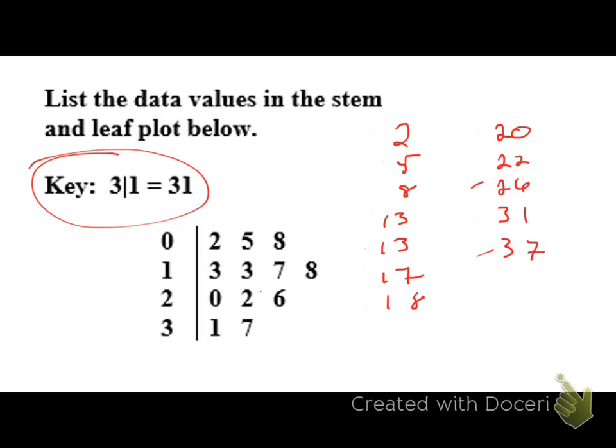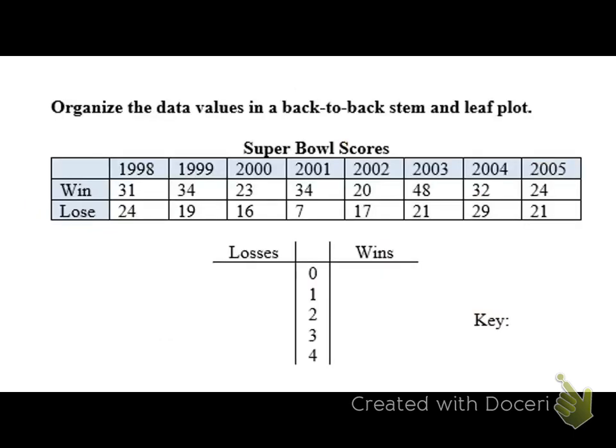Now, sometimes it becomes helpful to create back-to-back stem and leaf plots. If you have two data sets that seem to be related, two numerical data sets that seem to be related, and you want to kind of take a look at their distributions together. Distributions is just how does the data sit in relationship to each other and all that kind of stuff.